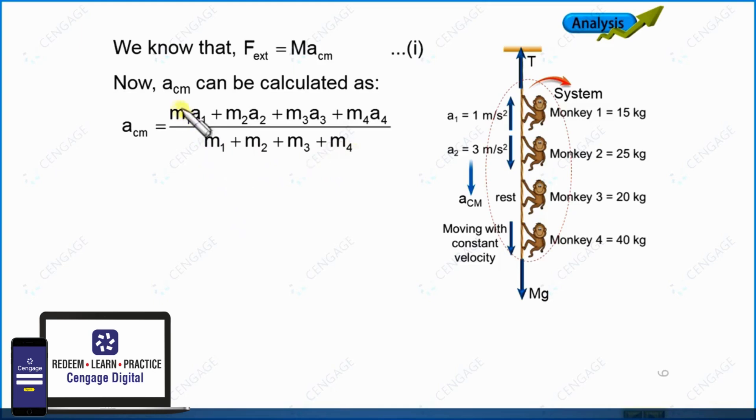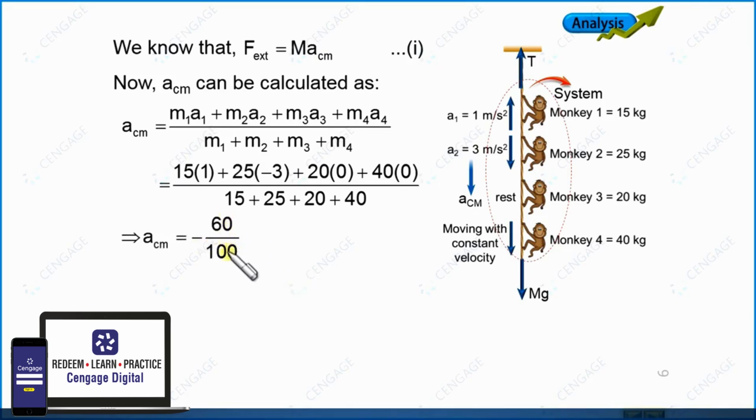Let us add the masses and substitute the value of the acceleration. If we solve this, we get 15(1) plus 25(-3) plus 20(0) plus 40(0) divided by 15 plus 25 plus 20 plus 40. This is 15 minus 75, which equals -60 over 100, or 6 by 10 meter per second square downward.